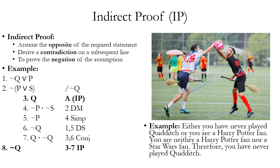The last step of the indirect proof is when you exit out of the scope of your initial assumption and conclude the negation of your original assumption must be true. The intuitive reason why indirect proof is justified is because if you make an assumption and it leads to a logical contradiction, that means your assumption must be false. Indirect proof can be used to prove a proposition by assuming its opposite.